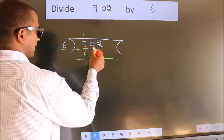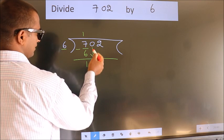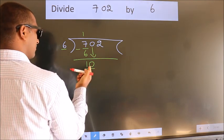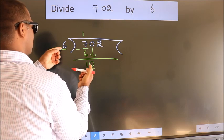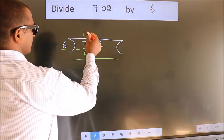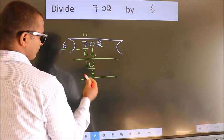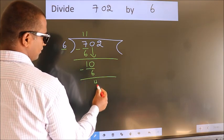After this, bring down the beside number. So 0 down. So 10. A number close to 10 in 6 table is 6 times 1 is 6. Now we subtract. We get 4.